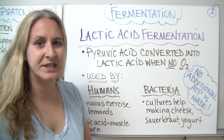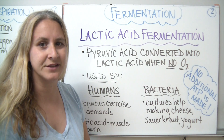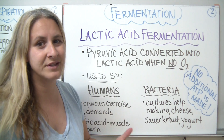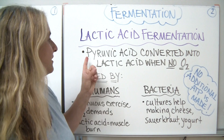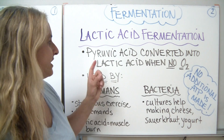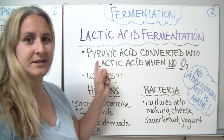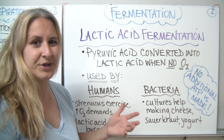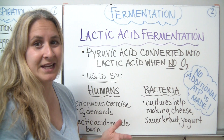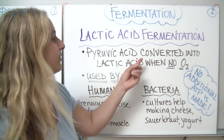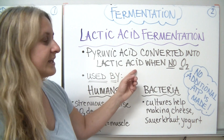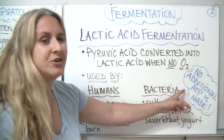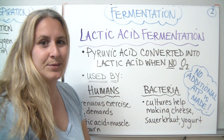The first type of fermentation we'll discuss is lactic acid fermentation. Some of you may have heard of lactic acid before, so this one should be fairly easy. During lactic acid fermentation, the end product of glycolysis called pyruvic acid has a lot of energy stored in it, but in the case of these organisms they can't get anything else out of it. So it simply gets converted into lactic acid when there's no oxygen present.